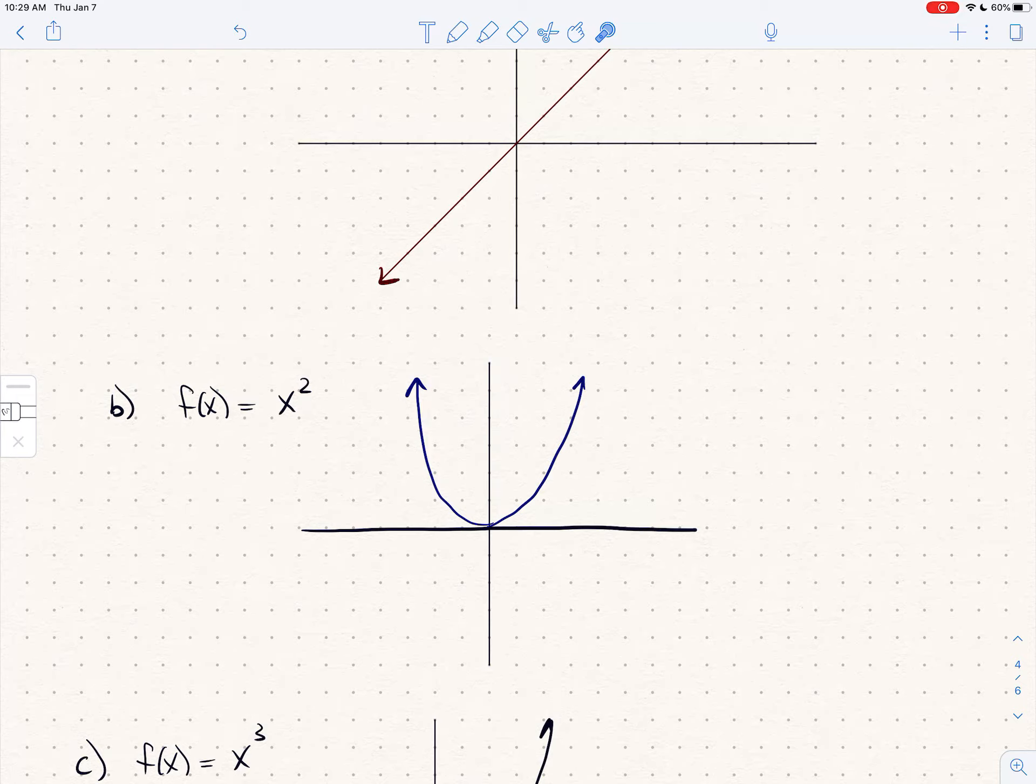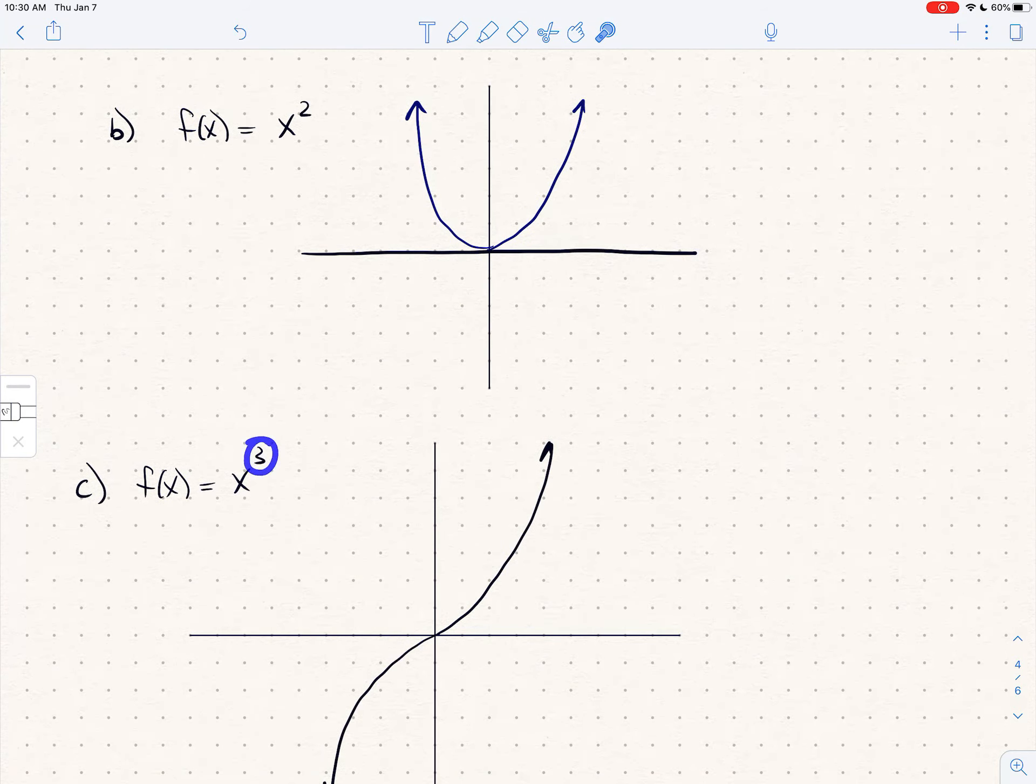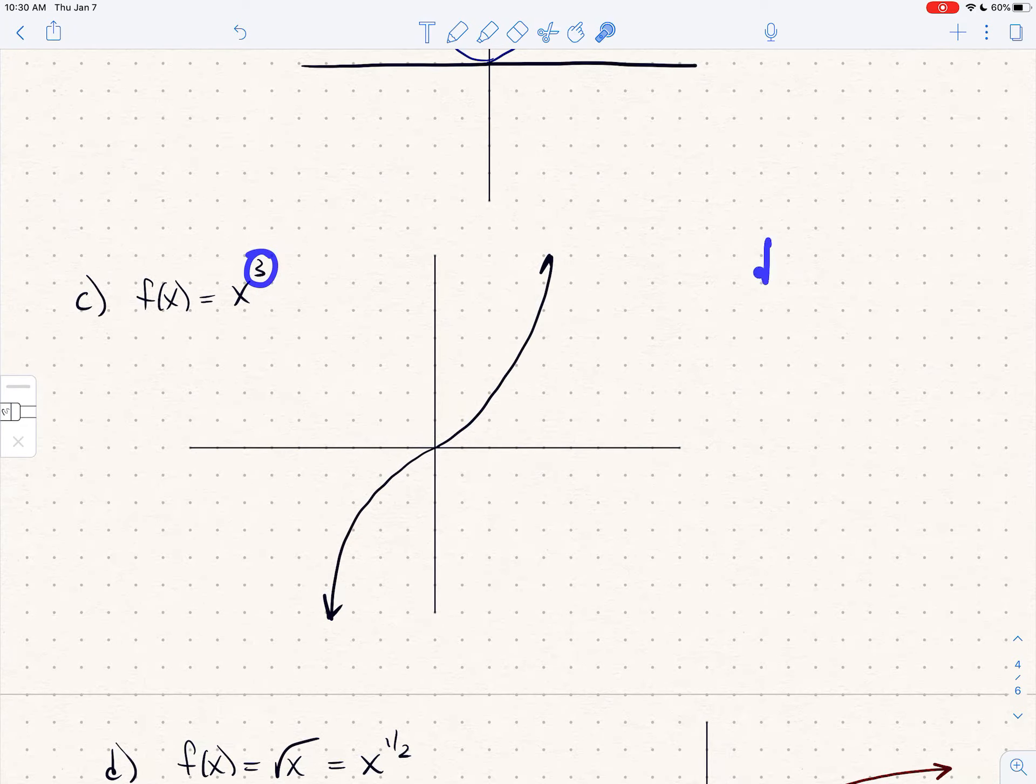The end behavior for this function is up up. It's up on this side. It's up on this side. So we would say the end behavior here would be up up. And now we look at when the power is 3. We're back to an end behavior of down up and that's the basic shape.